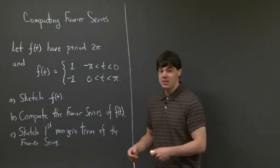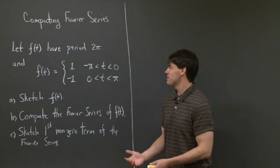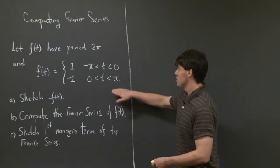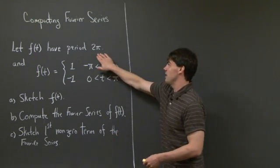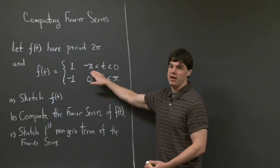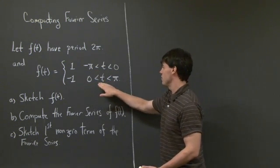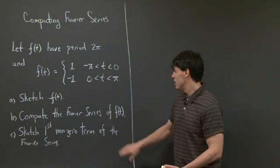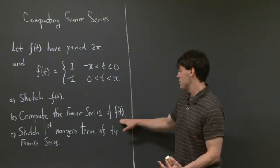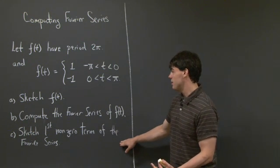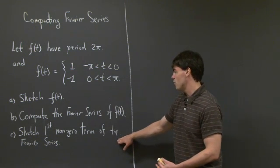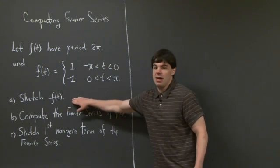Hi, everyone. Welcome back. So today, we'd like to tackle a problem in Fourier series. Specifically, we're going to compute the Fourier series for a simple function. The function we're interested in is f of t, which is periodic with period 2π. f of t is 1 from minus π to 0, and then it's minus 1 from 0 to π. First, we're interested in sketching f of t. Secondly, we'd like to compute the Fourier series for f of t. And thirdly, we'd like to sketch the first non-zero term of the Fourier series on top of f of t. I'll let you think about this problem for now.